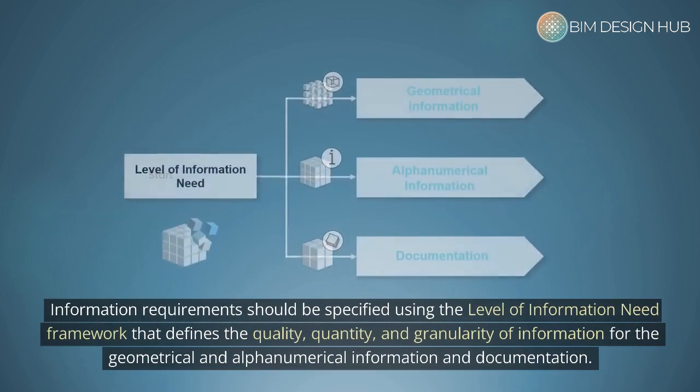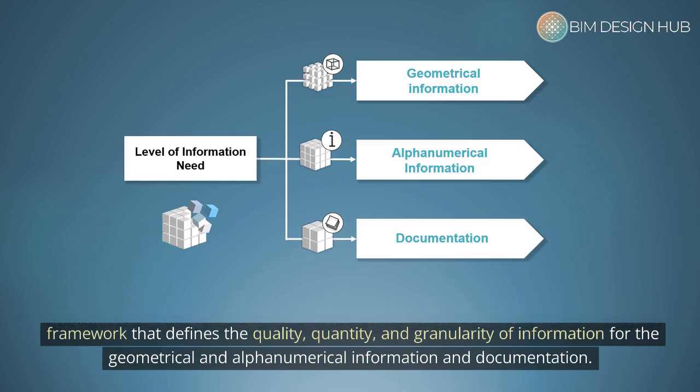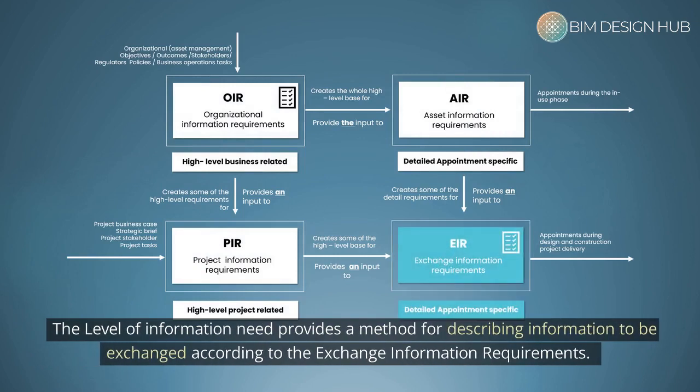Information requirements should be specified using the Level of Information Need framework, which defines the quality, quantity, and granularity of information for geometrical and alphanumerical information and documentation. The Level of Information Need provides a method for describing information to be exchanged according to the exchange information requirements.